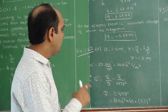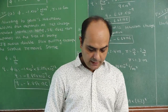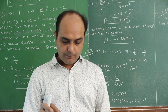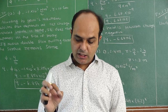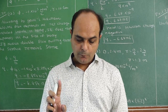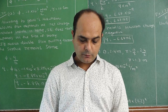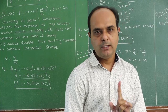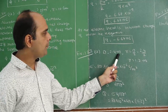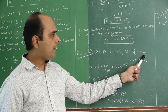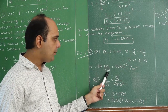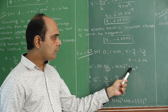We are moving on to example number 22. A uniformly charged conducting sphere of 2.4 meter diameter has a surface charge density of 80 microcoulomb per meter square. First question: find the charge on the sphere. Second question: what is the total electric flux leaving the surface of the sphere? The diameter is 2.4 m, so radius r = d/2 = 1.2 meter. Surface charge density sigma is 80 microcoulomb per meter square, that is 80 into 10 to the minus 6 coulomb per meter square.